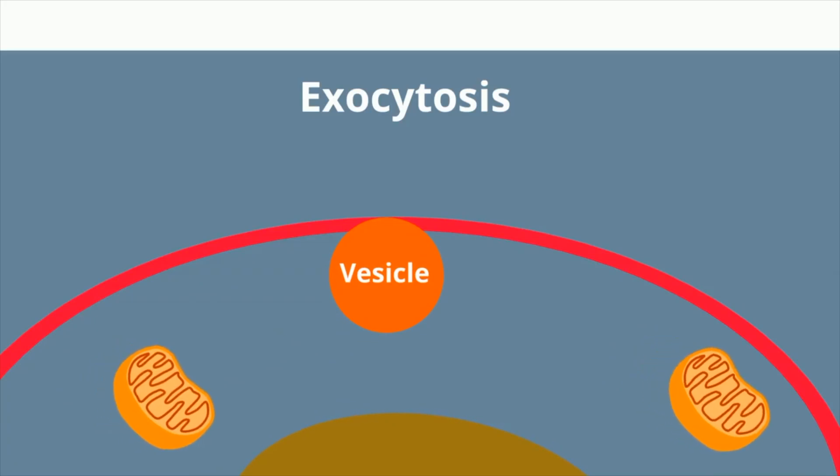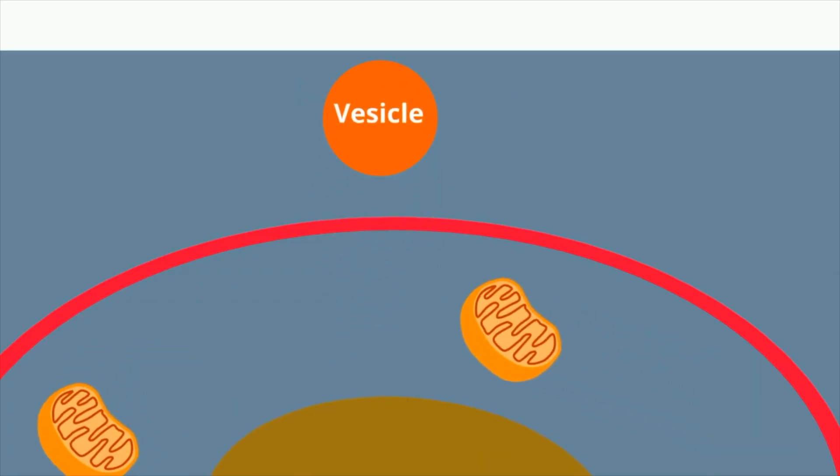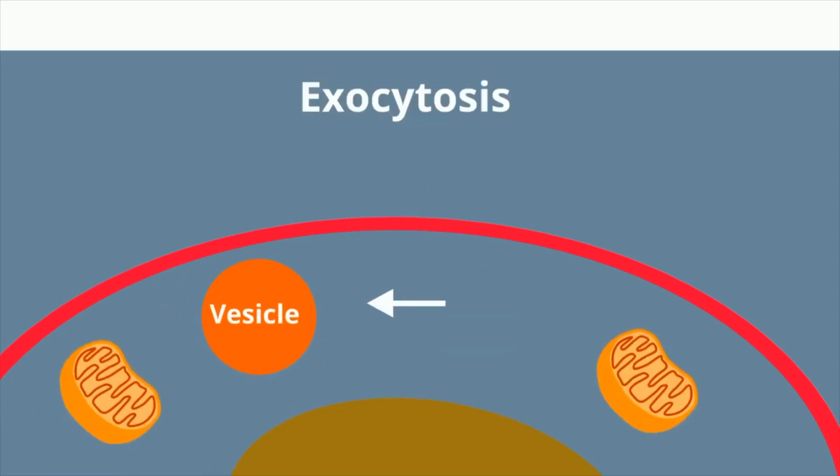Exocytosis occurs when the cell expels an object out of the cell. Objects inside the cell are encased in a vesicle, which is expelled.